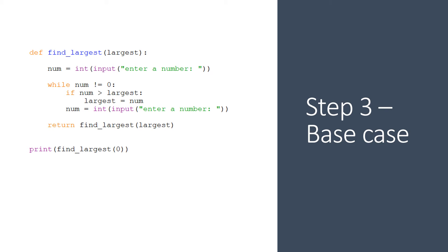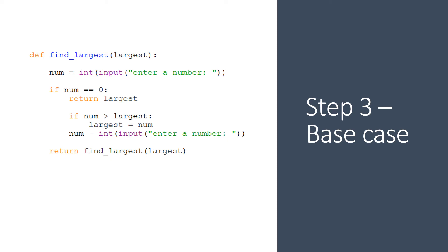Thirdly, I'm going to have to change the loop into a base case. The loop repeats while the number does not equal zero — the test that follows the word while is the test that continues the repetition. Remember that a base case stops the repetition, so we need to swap the test to its opposite. Instead of looping while the number is not zero, we stop when the number is zero — we've just reversed the logic. And remember that following the base case, we have the word return followed by a value, our final value, which is what we return down the chain of functions to the main program.